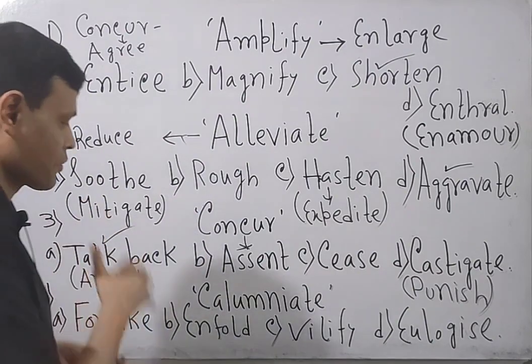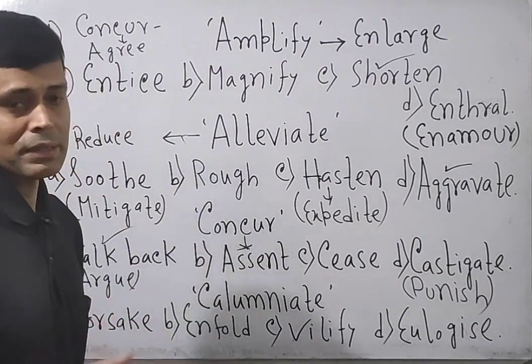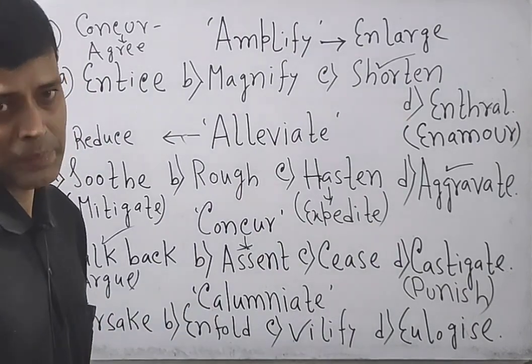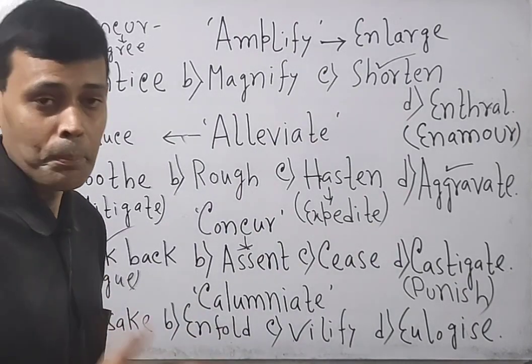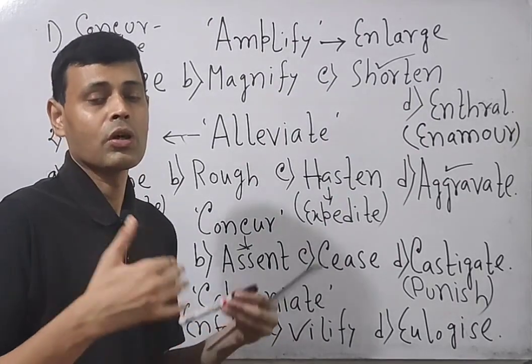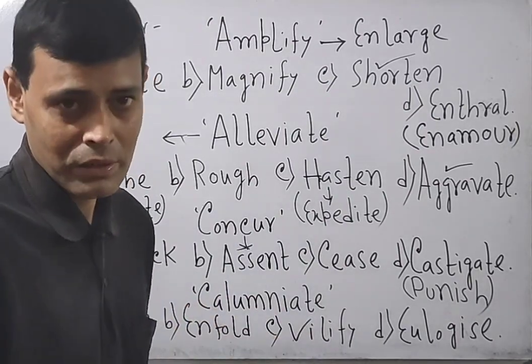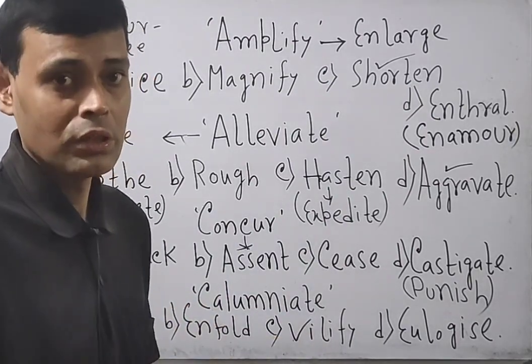Now go next. Calumniate means blame or asperse or soil or malign, even you can say criticize to some extent.